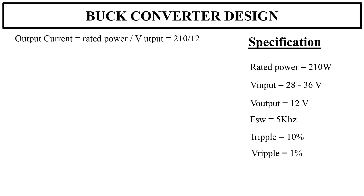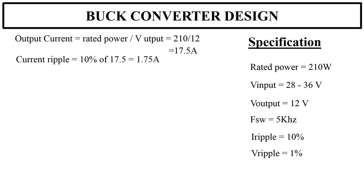Output current is given by rated power divided by the output voltage — that is 210 divided by 12 volts, which equals 17.5 amperes. Therefore, current ripple is 10% of 17.5 amperes, that is 1.75 amperes.